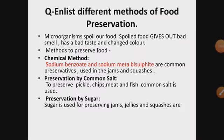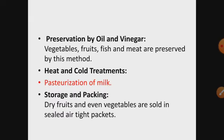Now there are some methods of food preservation. Microorganisms spoil our food — spoiled food gives a very bad smell, bad taste, and changes color. Methods of preservation include: some chemicals used as preservatives like sodium benzoate and sodium metabisulfite; preservation by salts and sugars; preservation by oil and vinegar; and heat and cold treatment, which is used during pasteurization of milk, which I will explain in the next slides.